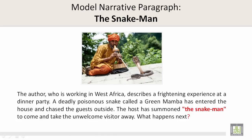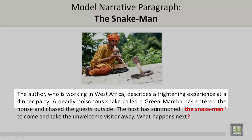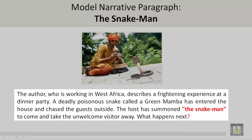A Model Narrative Paragraph about the Snake Man. The author, who is working in West Africa, describes a frightening experience at a dinner party. A deadly poisonous snake called a green mamba has entered the house and chased the guests outside. The host has summoned the Snake Man to come and take the unwelcome visitor away. What happens next?